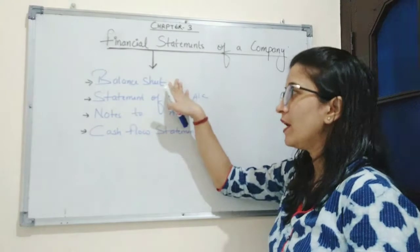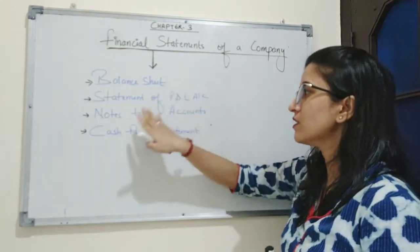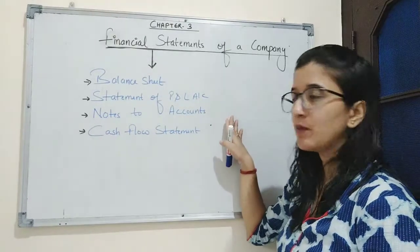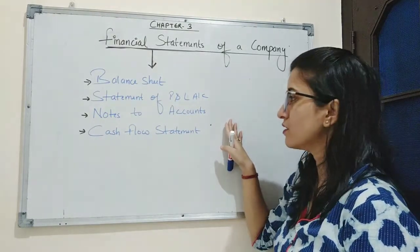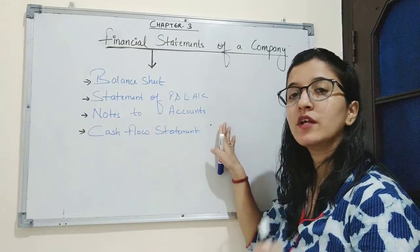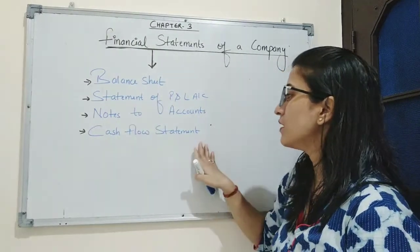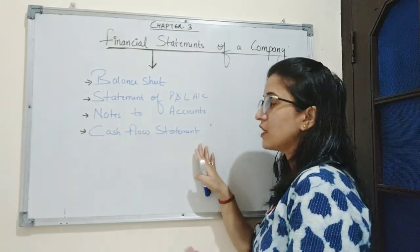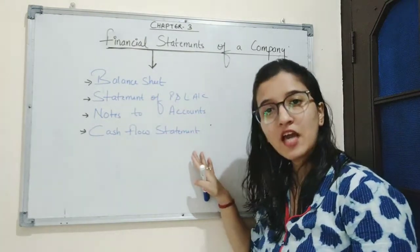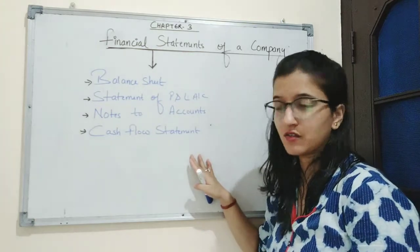Balance sheet is prepared to find out the financial position of the business. Statement of profit and loss account is prepared to know the profitability of the business. Notes to accounts is prepared to calculate the share capital. And cash flow statement provides information about cash receipts, cash payments, or net cash.